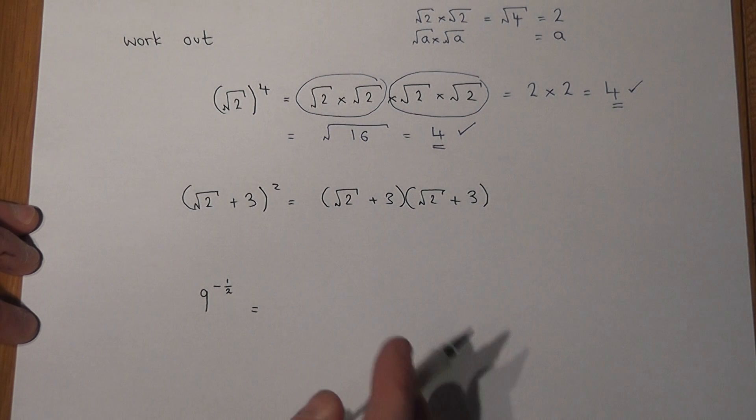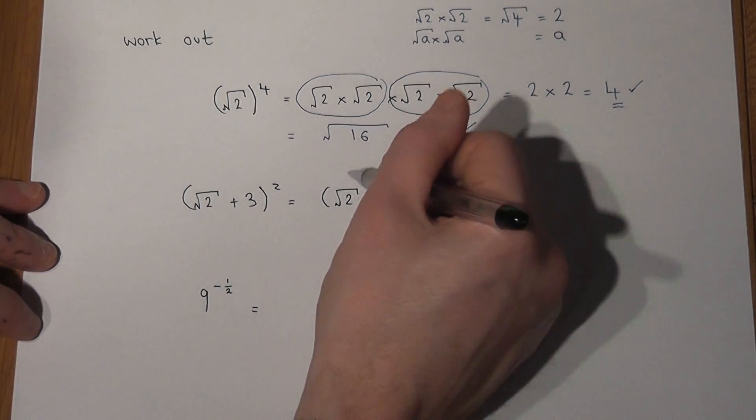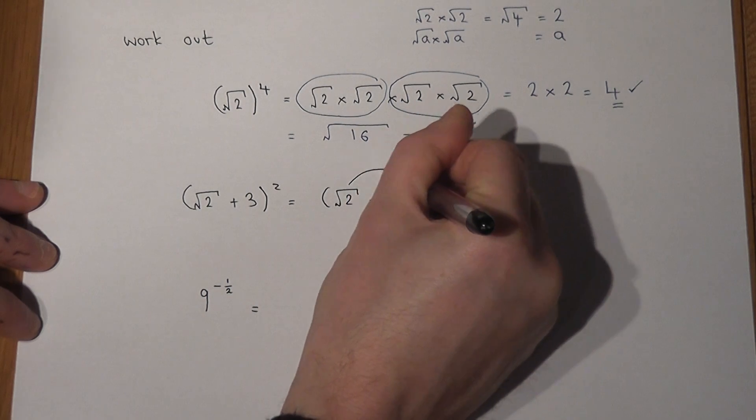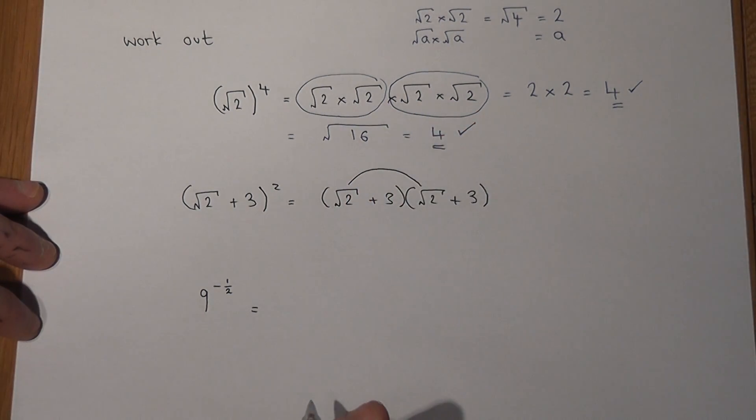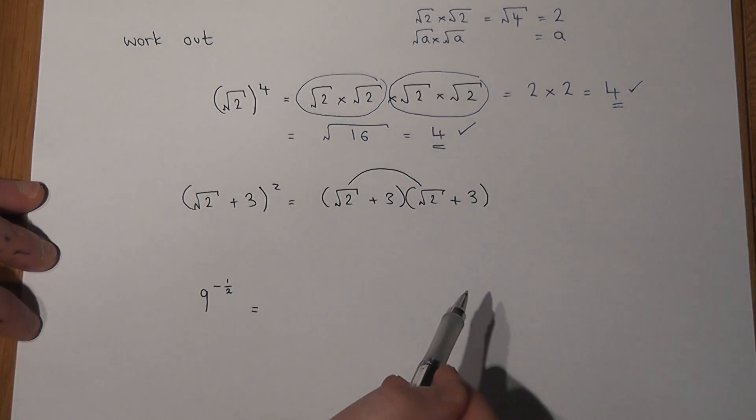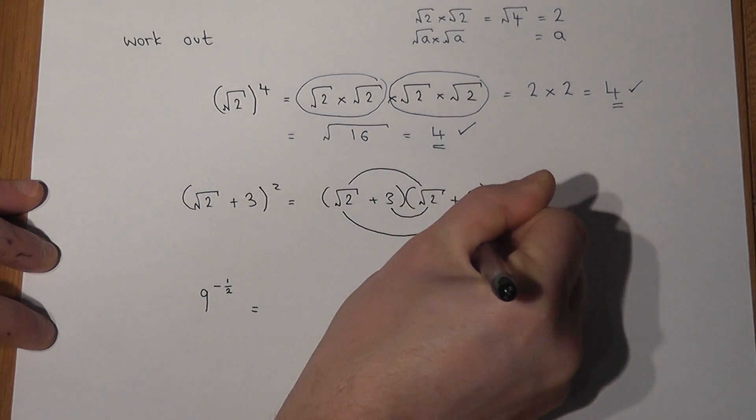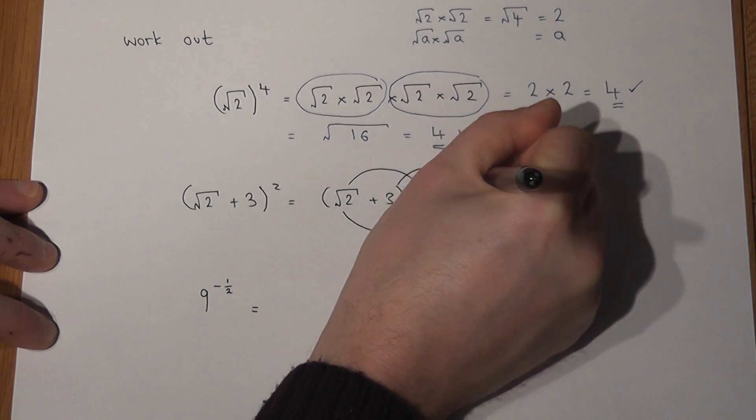Then to expand brackets, we have different methods. They can be called FOIL or smiley face method, but I tend to draw lines to match off the things which I need to times together. I've got the first two terms to times, I've got the inner terms, the outer terms, and the last two terms.